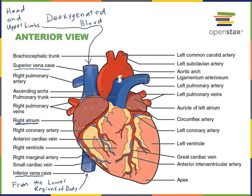Blood also drains from the coronary circuit. The blood vessels supplying blood to the muscle of the heart wall are the coronary blood vessels. There are coronary arteries that deliver oxygen-rich blood to the heart muscle, and then cardiac veins drain that blood. The cardiac veins — such as the great cardiac vein or the small cardiac vein — drain into one large cardiac vein known as the coronary sinus, which then drains into the right atrium.